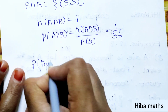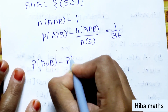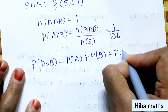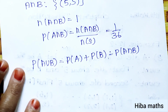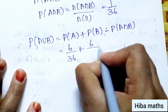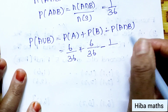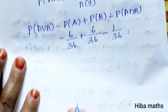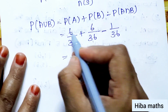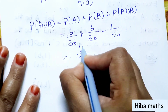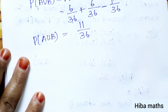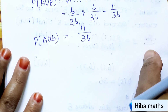Now P of A union B formula is P of A plus P of B minus P of A intersection B. That is 6 by 36 plus 6 by 36 minus 1 by 36. The denominator is 36 throughout. So 6 plus 6 is 12, minus 1 is 11. Therefore P of A union B equals 11 by 36.